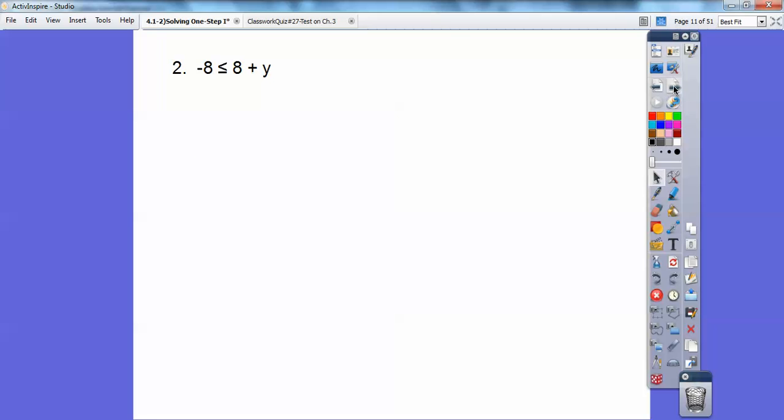This one's negative 8 less than or equal to 8 plus y. Just like solving equations, you'd subtract off the 8. When you do that, I get negative 16 on the left-hand side, less than or equal to. I should have crossed these 8s out, but this 8 would cross out that negative 8 right there. I like to have the variable on the left-hand side, so I'm going to flip it around. When you flip it around, it flips the inequality around also.